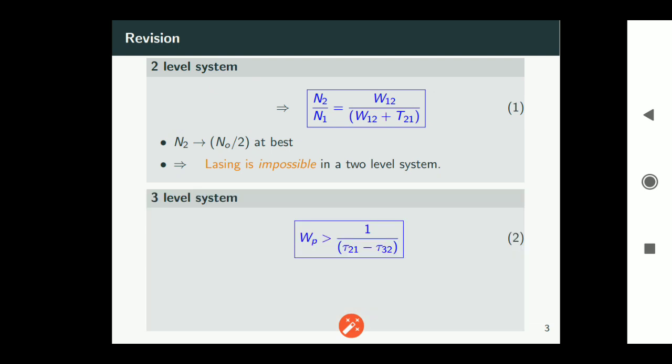And then we have studied three level system. This is the equation condition for population inversion in terms of pumping radiation.